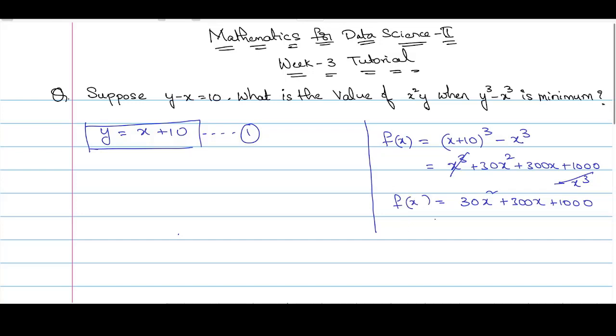For this function f of x, if we calculate f dash of x and equate it to 0, we will get the critical points of f of x. f dash of x will be 2 times 30x plus 300.